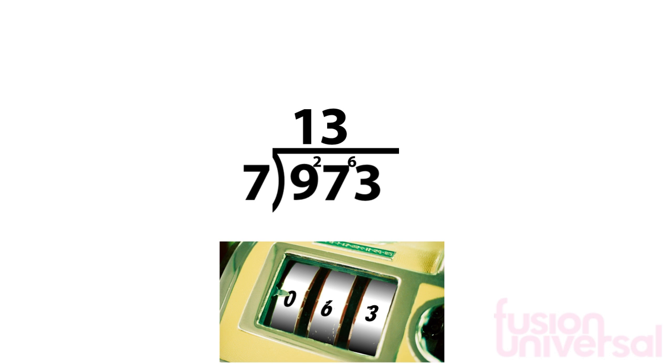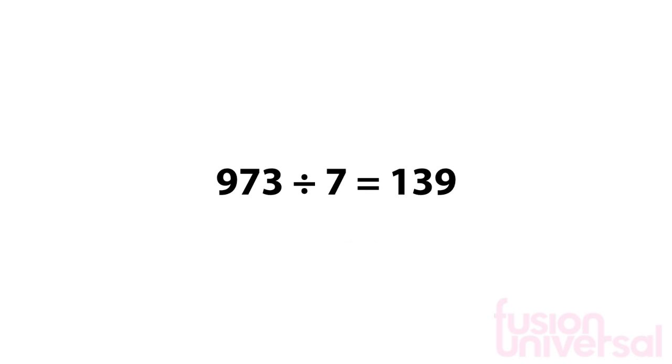Then, 7 goes into 63 9 times, with no remainder. The answer appears above the bracket. We have worked out that 973 divided by 7 equals 139.